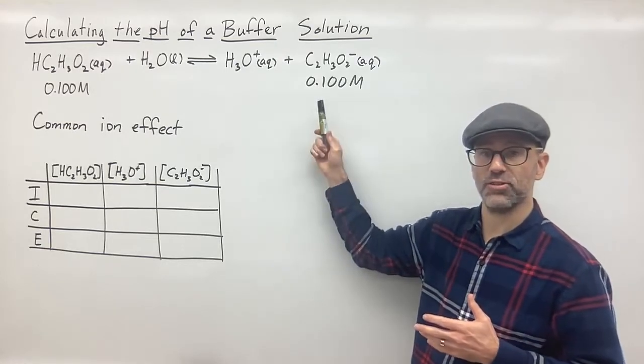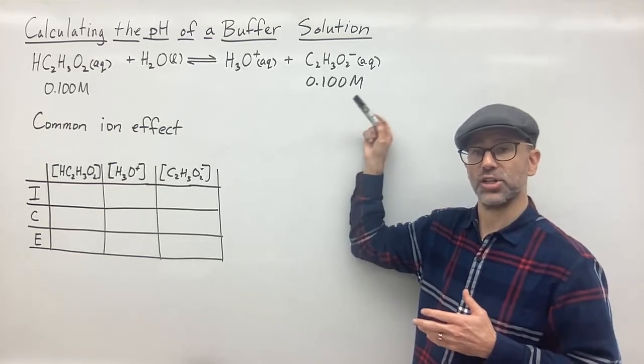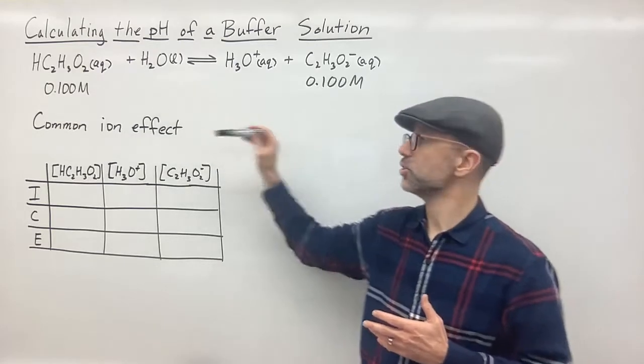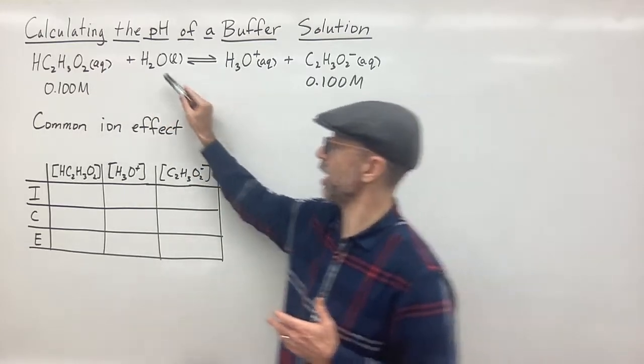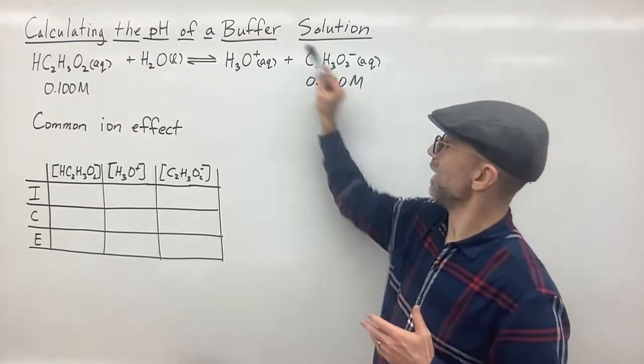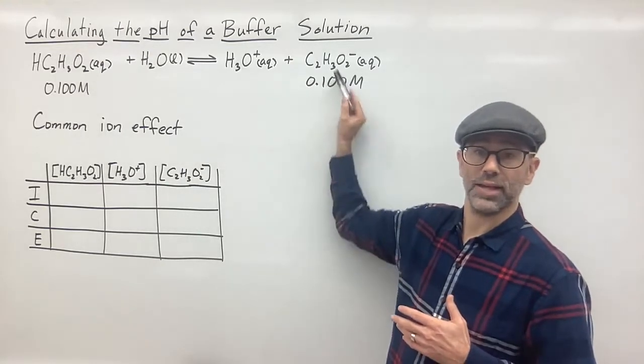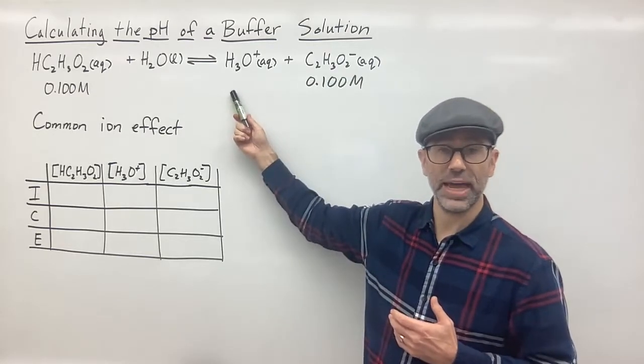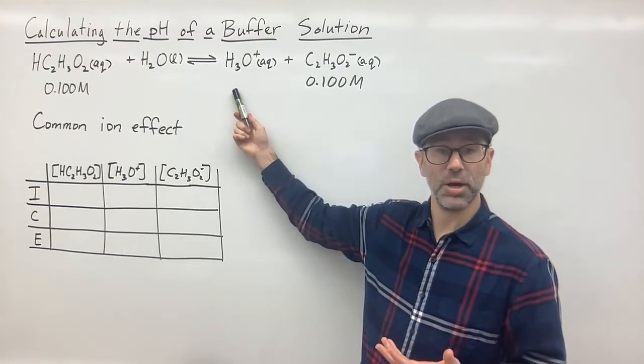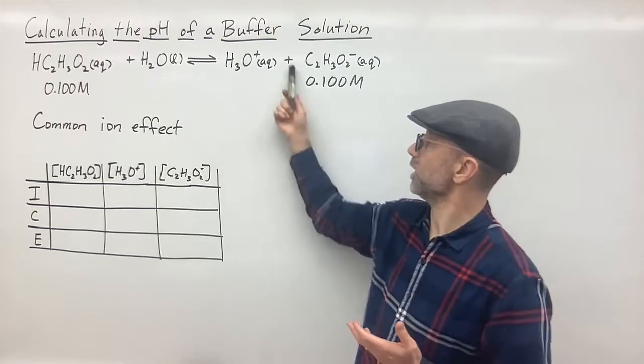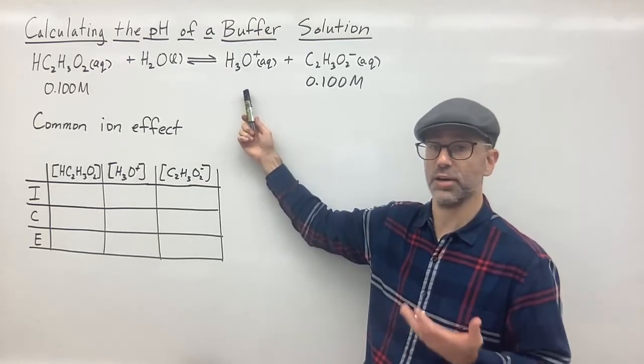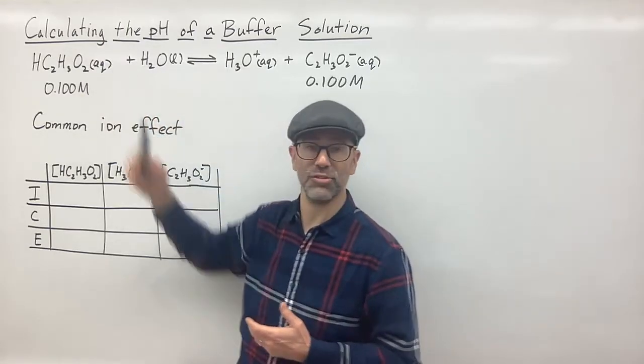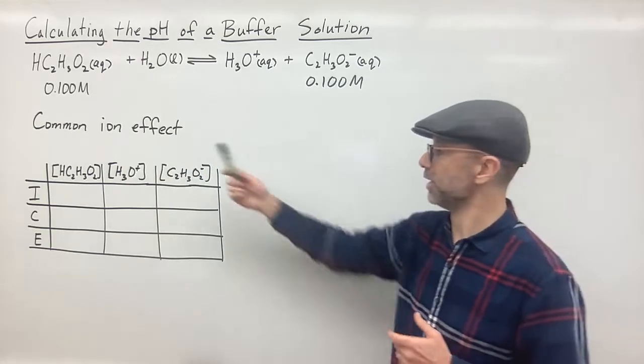So I throw some sodium acetate in there and what happens according to Le Chatelier's principle? That says that if I disturb this system by adding product, then it's going to shift in the direction to undo that disturbance. So it's going to want to shift to the left. So it's going to shift the equilibrium to the left in order to create more acid and less H3O+ and less acetate ion. And so what is that going to do? That's going to suppress the amount of H+ that's produced in the buffer. And so what happens is you get lower amount of H+ in solution and therefore in this case, the pH would be greater than normally if you would just had the acid alone.